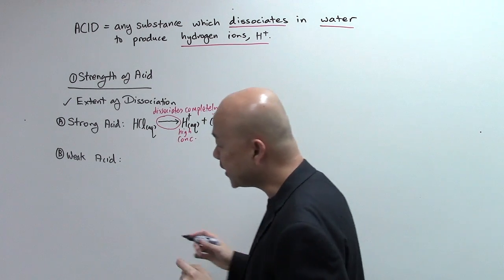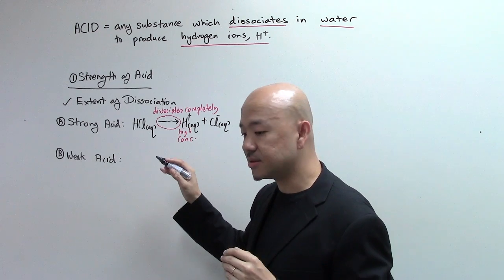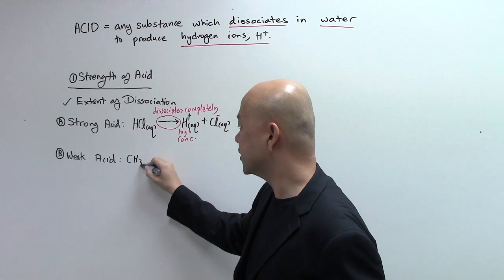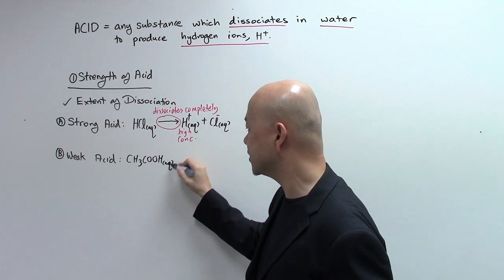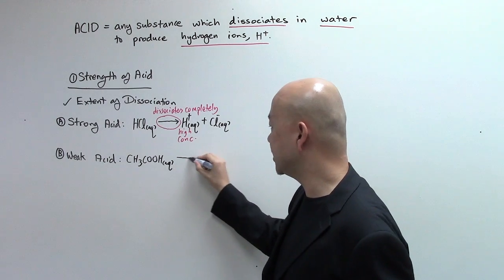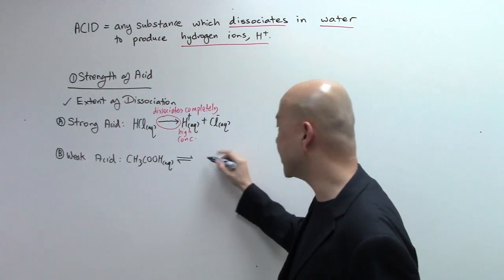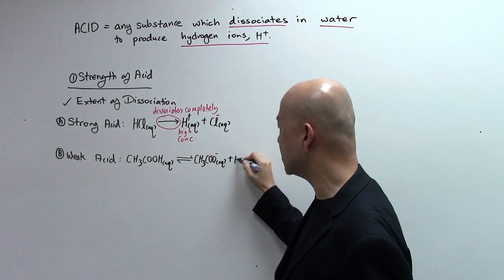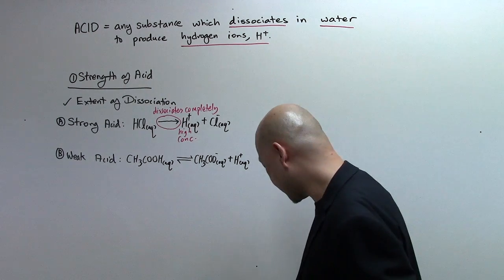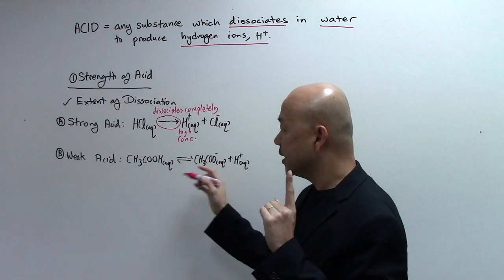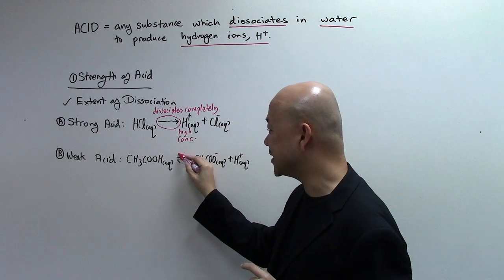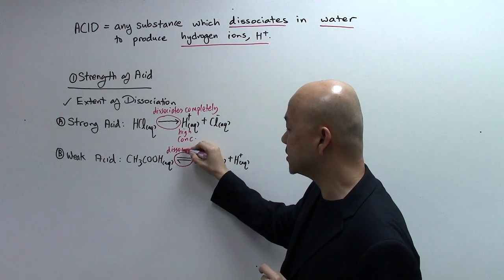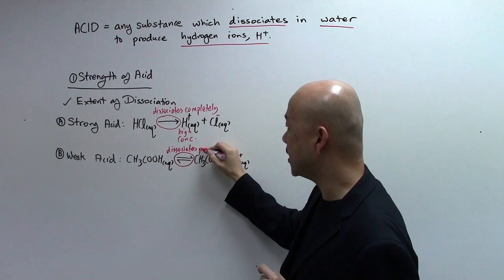Now let's look at an example for the weak acid. A common one is ethanoic acid, CH3COOH. When it dissociates in water, it dissociates partially to form ethanoate ions and H-plus ions. The arrow used for a weak acid is a reversible arrow. So the key word for a weak acid is that it dissociates partially.